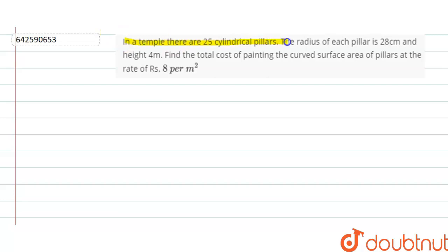cylindrical pillars. The radius of each pillar is 28 centimeters and height is 4 centimeters. Find the total cost of painting the curved surface area of pillars at the rate of rupees 8 per meter square.